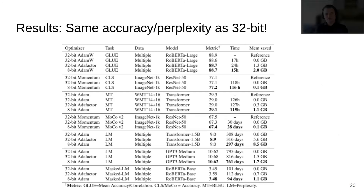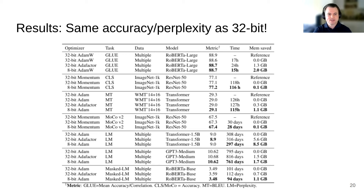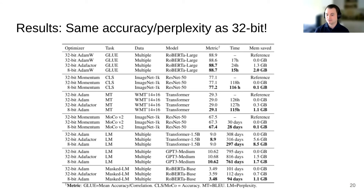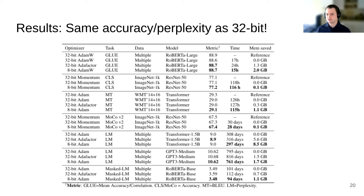Looking at results across a range of tasks — fine-tuning on NLP datasets, ImageNet classification, machine translation, ImageNet fine-tuning, language modeling with different-size transformers, and masked language modeling — we find that 8-bit optimizers compared to 32-bit standard optimizers reach the same performance but save a lot of memory, especially for large networks. For the 1.5-billion parameter transformer, we save 8.5 gigabytes. Training is also a little bit faster because you load smaller values from slow memory and do everything in cache.